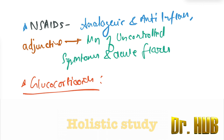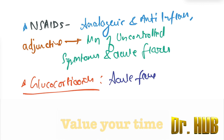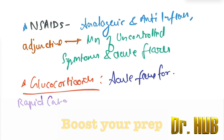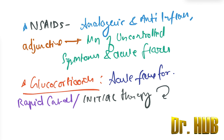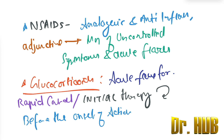The second drug class is glucocorticoids. Glucocorticoids are used in acute flares for rapid control, as well as initial therapy before the onset of action of the DMARDs.